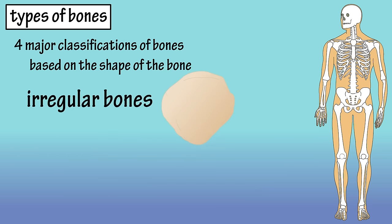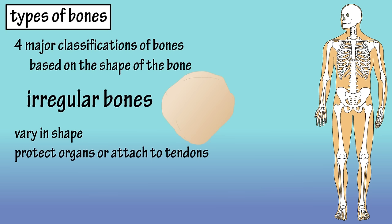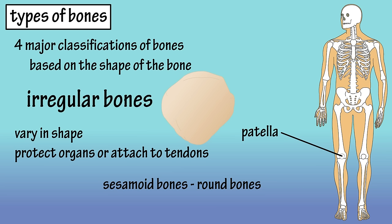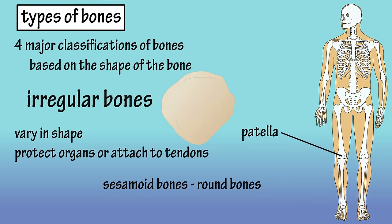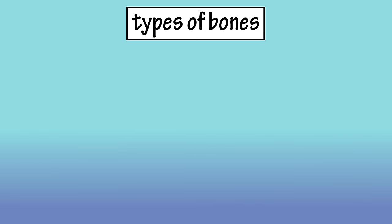Irregular bones vary in shape so they do not fit into one of the three previous categories. Some irregular bones protect organs and some, such as the patella or kneecap, attach to tendons. The patella is also classified as a sesamoid bone or round bone. Some sources list sesamoid bones as a fifth bone classification by itself. And that covers the basics on the four types of bones in the body.